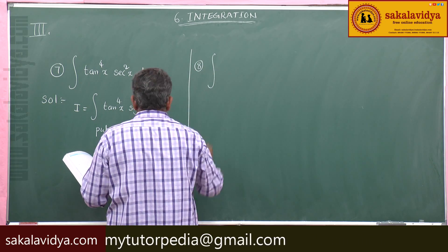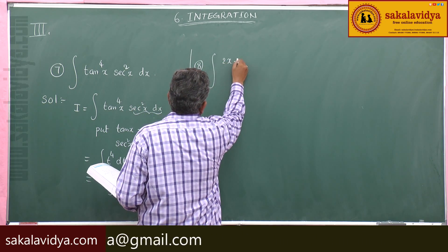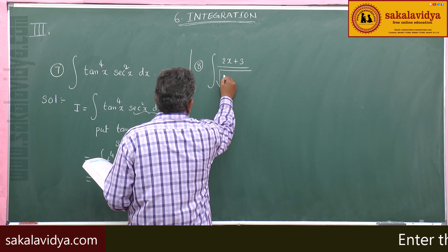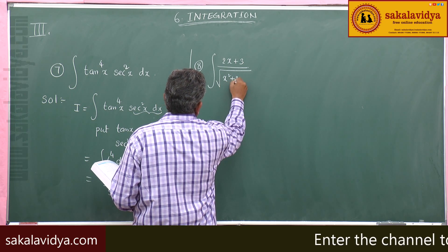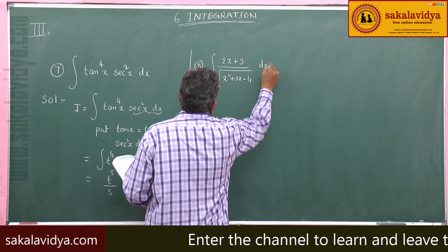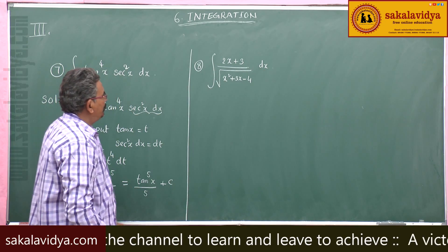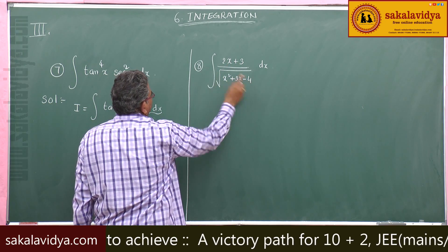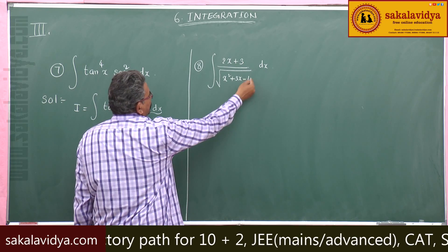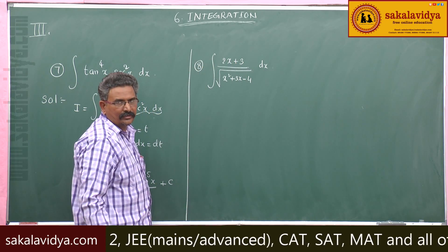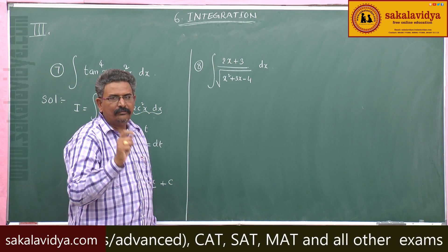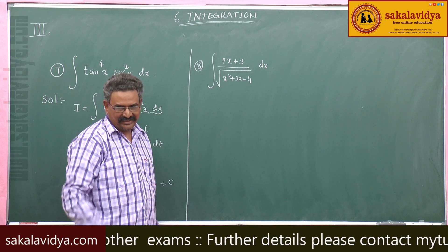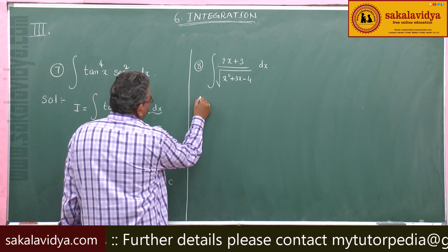Eighth one: evaluate integral of (2x + 3) divided by root of (x² + 3x − 4) dx. Now, 2x + 3 is the derivative of x² + 3x − 4. If we say this is f(x), then 2x + 3 will be f'(x). It comes to the standard form: integral of f'(x) divided by root f(x) dx, which equals 2 root f(x). So now we can solve this problem.